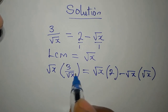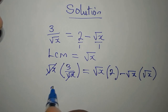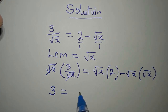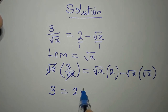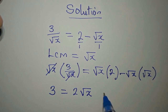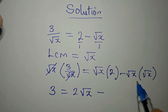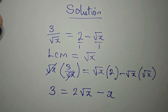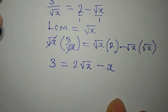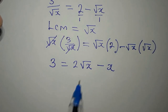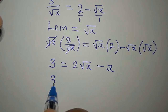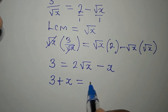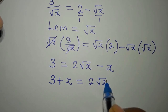From here, this will go with this. Now we have 3 to be equal to square root of x times 2, that will give us 2 square root of x. Then minus square root of x times square root of x will give us x. So from here, I want to make this the subject, so we have 3 plus x to be equal to 2 square root of x.